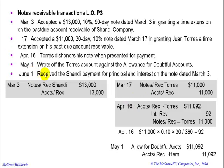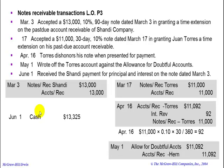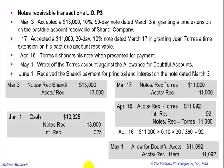On June 1st, we received the Shandy payment for principal and interest on the note dated March 3rd. We're going to get the payment for this note: a debit to cash for the principal of $13,000 plus interest of $325. We'll credit notes receivable $13,000 and credit interest revenue for $325, and that concludes the transaction.